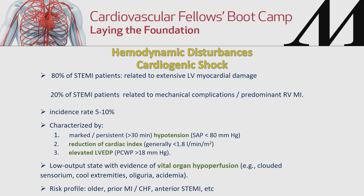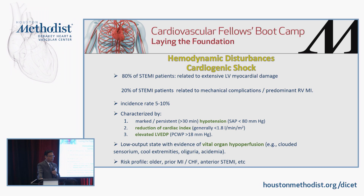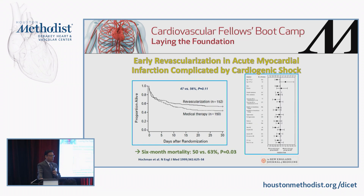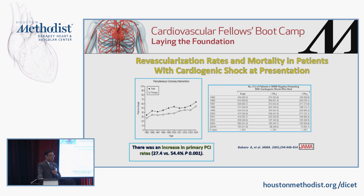With cardiogenic shock and acute MI, presentation includes hypotension, reduction in cardiac index, elevated LV filling pressures, low output states, vital organ hypoperfusion, decreased mentation, and decreased urine output. Risk factors include older patients, those with prior infarcts, and anterior infarcts. In the SHOCK trial, primary PCI significantly improved mortality in patients less than 75 years of age presenting with cardiogenic shock and STEMI, with a significant decrease in mortality over the past two decades.